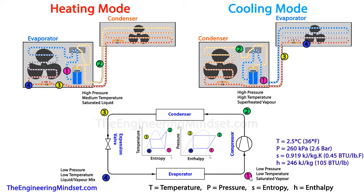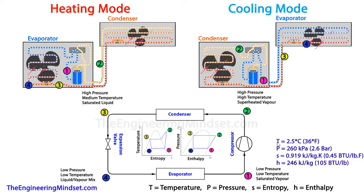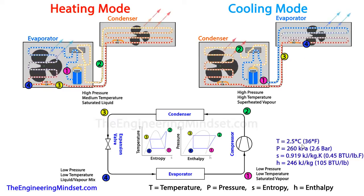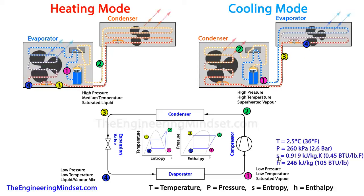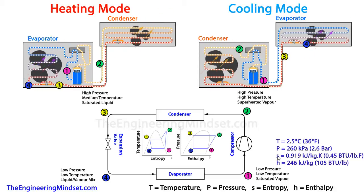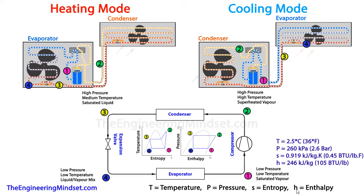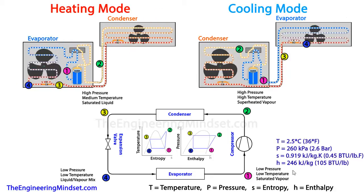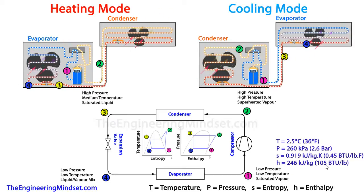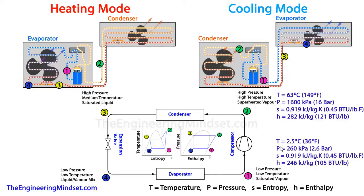Now for the numbers. At Point 1 — the low-pressure, low-temperature saturated vapor — we start with a temperature of about 2.5°C (36°F) and a pressure of 260 kPa (2.6 bar). The entropy is 0.9 kJ/kg·K (0.45 BTU/lb·°F) and the enthalpy is 246 kJ/kg (105 BTU/lb).